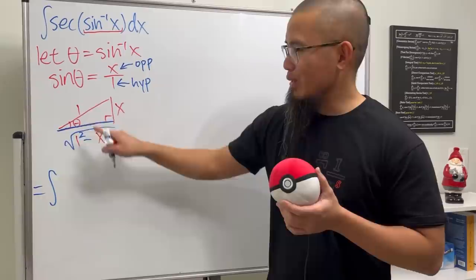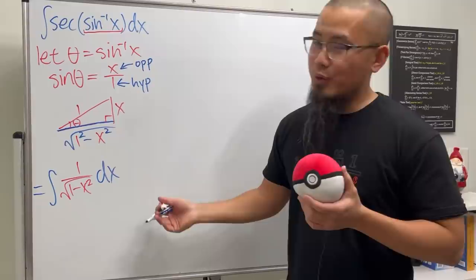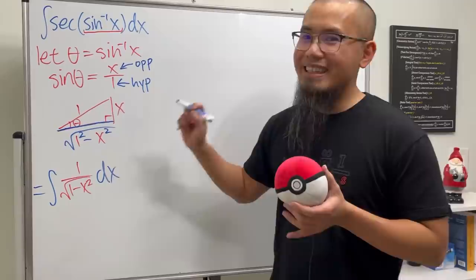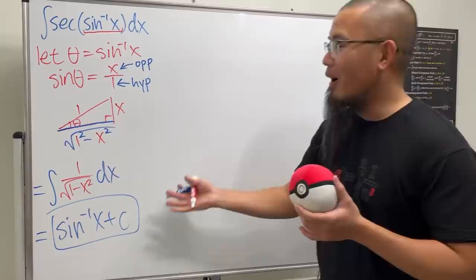Right, 1 over square root of 1 minus x squared. And of course if you want, you can do trig substitution whatsoever, but you know that the answer for this is inverse sine of x. And of course don't forget the plus C and with that we are done.